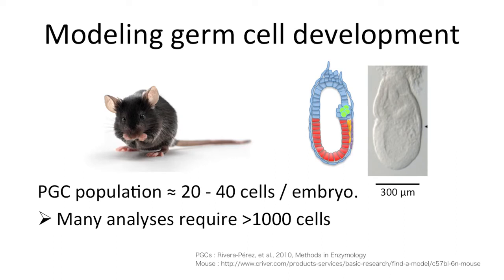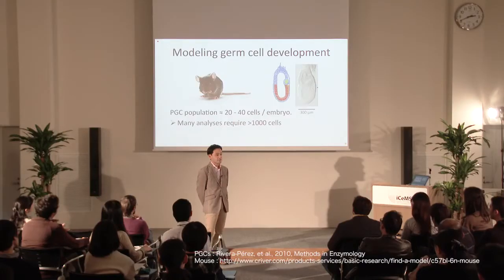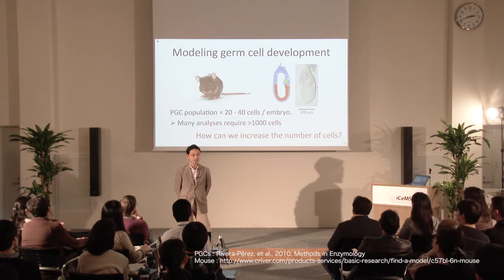One of the reasons we couldn't understand germ cell development mechanisms in mice is that the PGC population is quite small — there are only 20 to 40 cells in the embryo at this stage. Recent advances in technology allow us to do various analyses in single cells, but many functional analyses still require thousands or even millions of cells. It is not realistic to harvest thousands of embryos for just one assay. So the question is: how can we increase our materials?